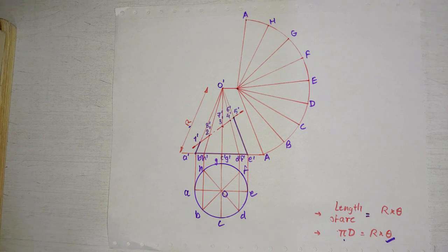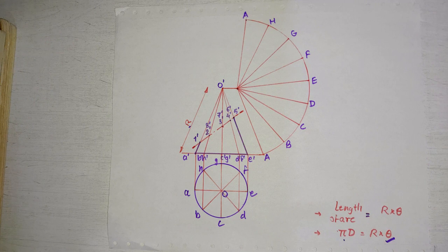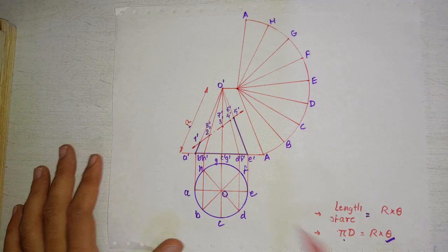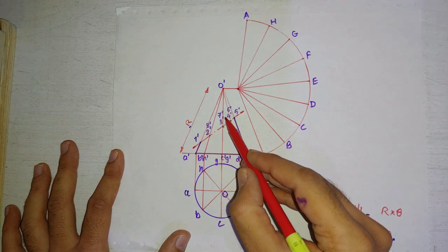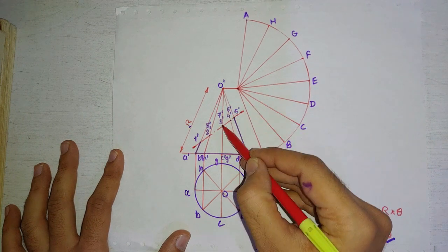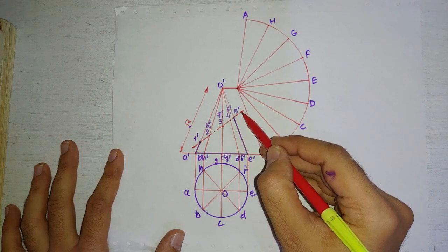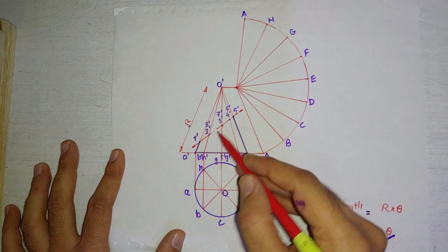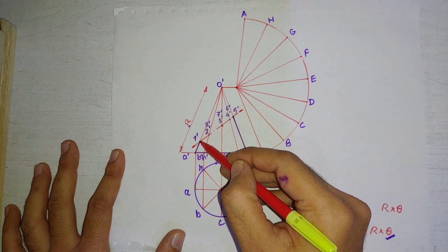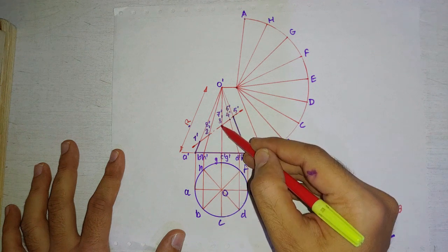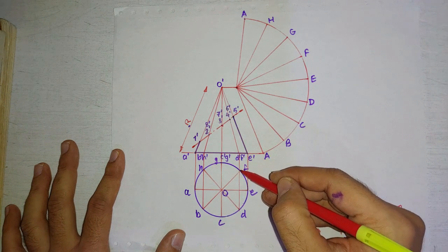Now let's introduce the cutting plane. The problem states the cone is cut by a section plane perpendicular to VP, inclined to the HP, and bisecting the axis. So we draw the cutting plane line at 45 degrees to XY, passing through the midpoint of the axis. The intersection of the cutting plane with each generator is notated: 1 prime on OA, 2 prime on OB, continuing as 3 prime, 4 prime, 5 prime, then 6 prime on OF, 7 prime on OG, and 8 prime on OH.